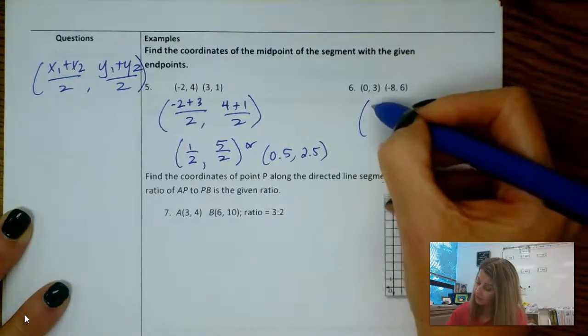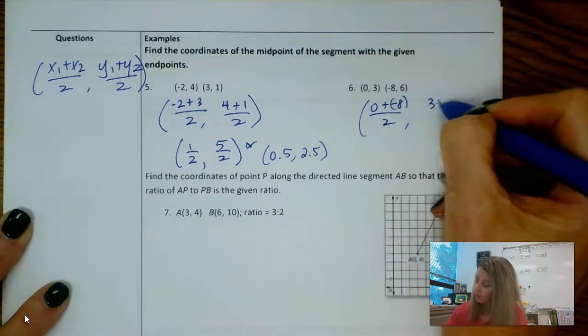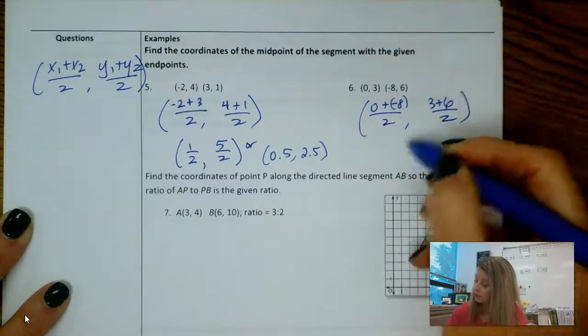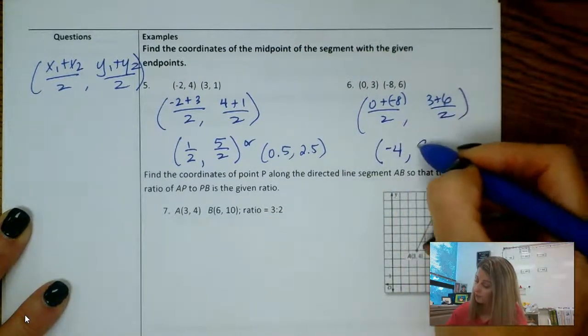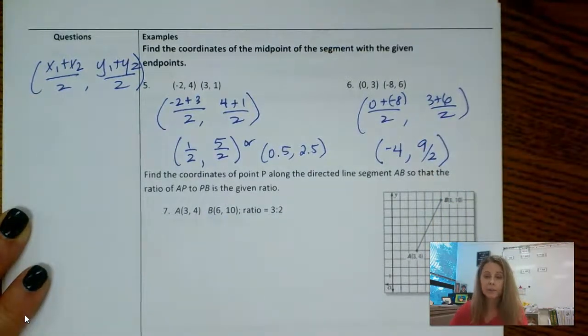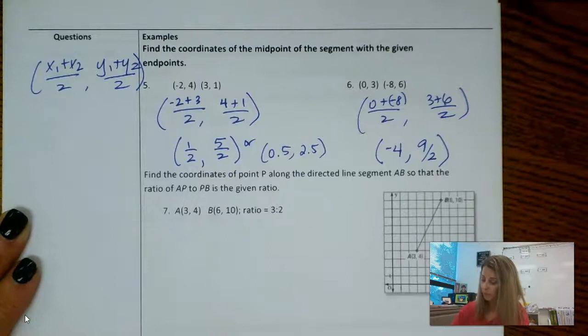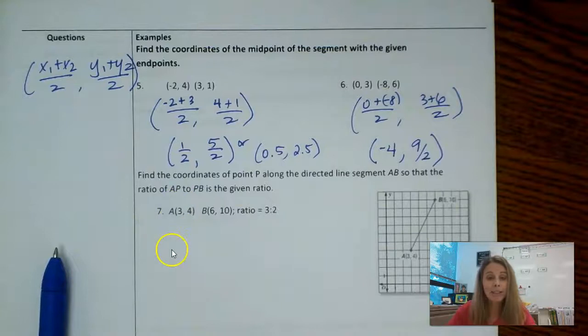Number 6 looks like we've got 2, 3 plus 6 divided by 2. We end up with a negative 4 and 9 halves, which is 4.5, so that would be fine too. Like I said, we'll skip 7 and 8. So as always, please ask questions if you need to.